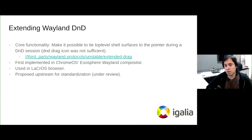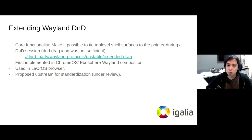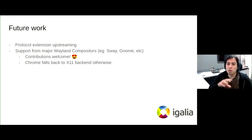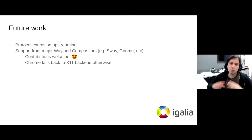This extension was then designed and implemented on the Exosphere Weston compositor. It's used nowadays by the Ozone browser. It was proposed upstream, but it's still under review. Its core functionality is to make it possible to anchor a top-level surface as a drag icon, but different from the standard drag icon — we can smoothly and seamlessly transition to a full browser window when the drag finishes.